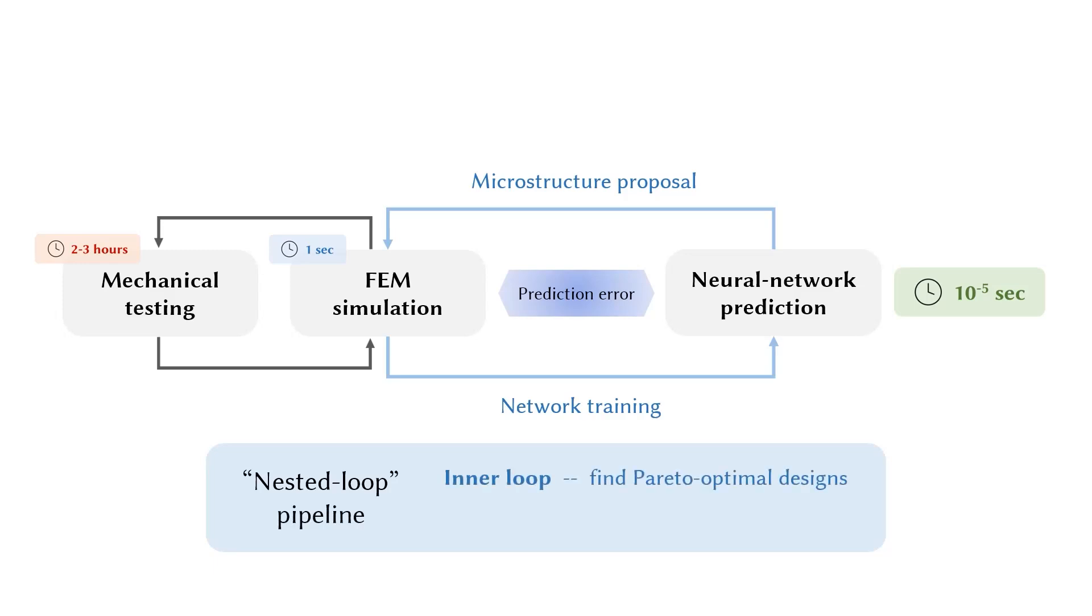The inner loop finds Pareto-optimal designs in the scope of simulation. In addition, the outer loop closes the sim-to-real gap.